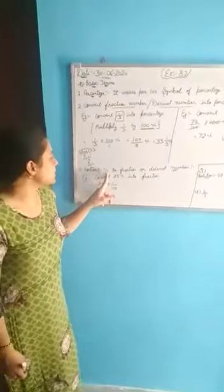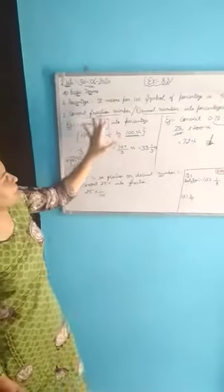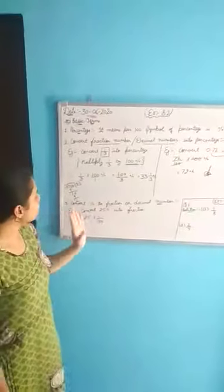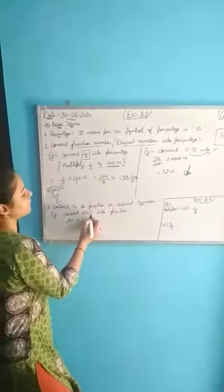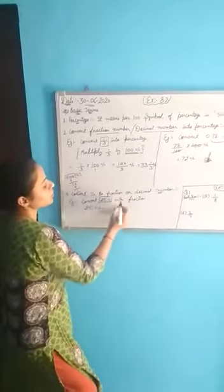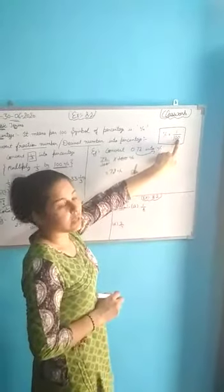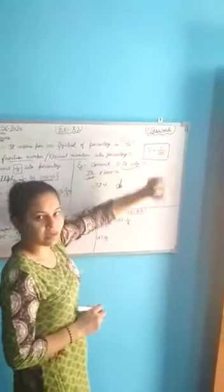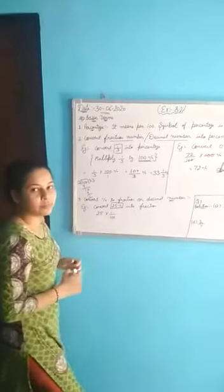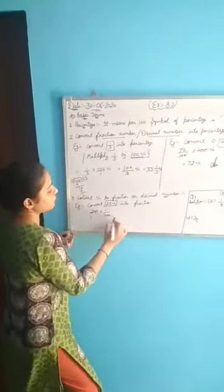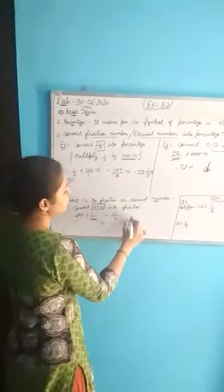Now our next topic is: convert percentage to a fraction or decimal number. This is the opposite of the previous topic. From a fraction or decimal number we found the percentage; now we will convert percentage back to a fraction. For example, convert 25%. Since percent means 1 by 100, replace the percent symbol with 1 by 100. So 25 times 1 by 100 gives 25 over 100, which simplifies to 1 by 4. That is your answer.